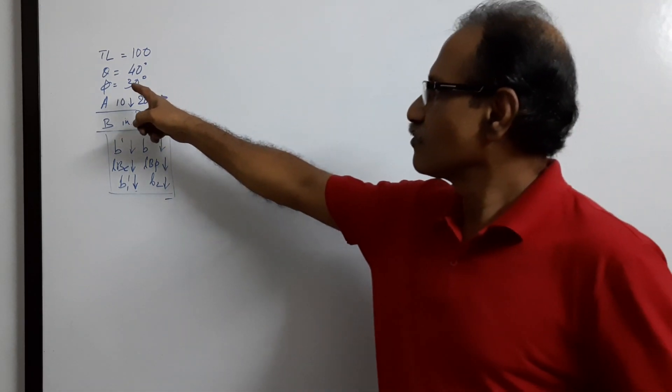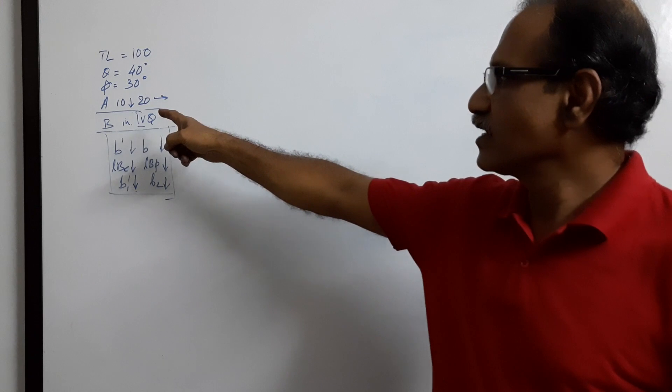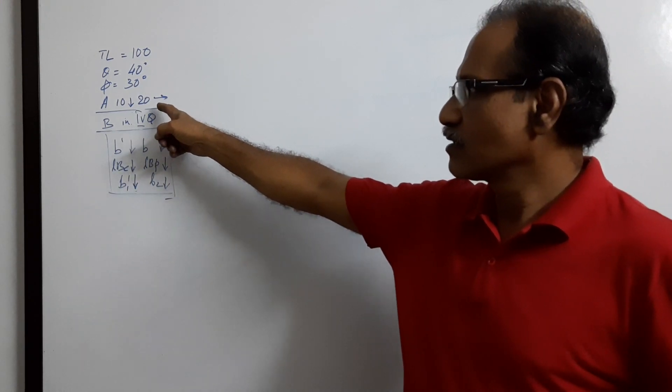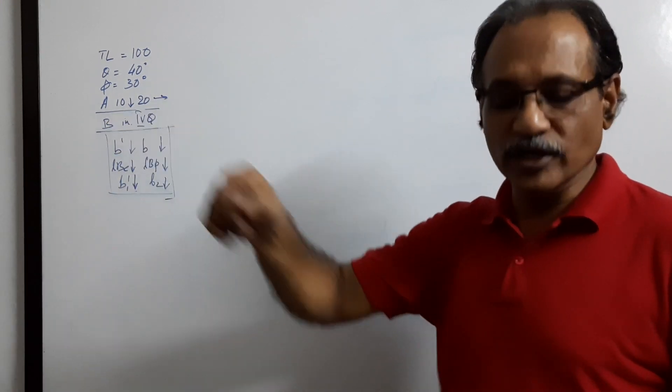Toe length 100, theta 40, phi 30. A in 4th quadrant, B also in 4th quadrant.